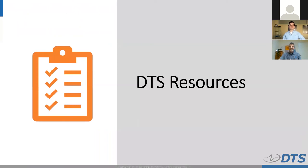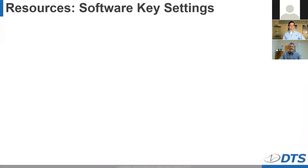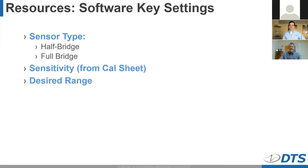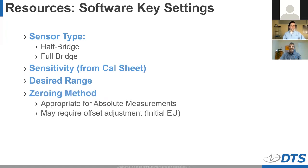Finally, we're going to cover what we recommend you have in mind when selecting and setting up your sensors, as well as what comprehensive materials we have in our help center. When setting things up in software, we make this pretty simple with whatever software package you're using from us — there are type-ins or drop-downs to make sure you're following things accordingly. Make sure you pay attention to your sensor type, sensitivity — you'll probably get this from your CAL sheet — your desired range, and your zeroing method. These first four are the ones you really want to have your eye on when setting things up correctly.